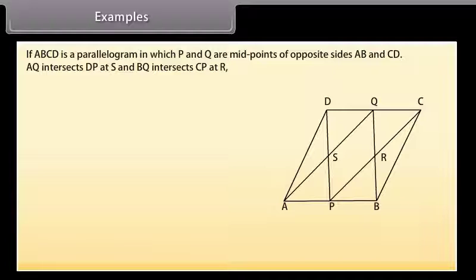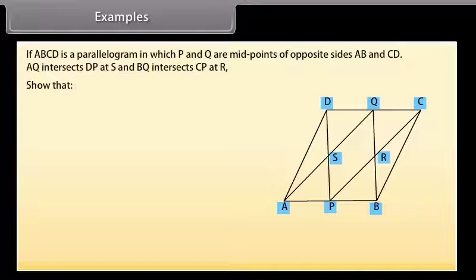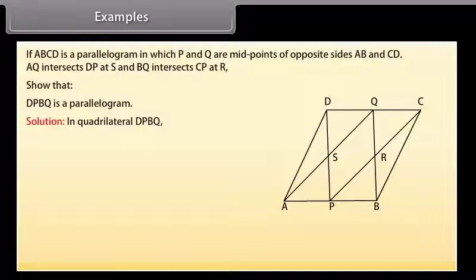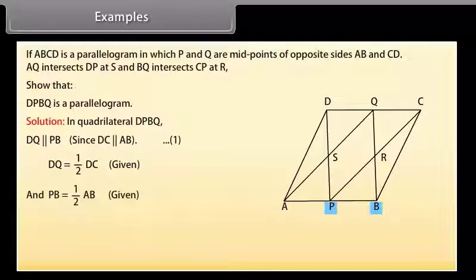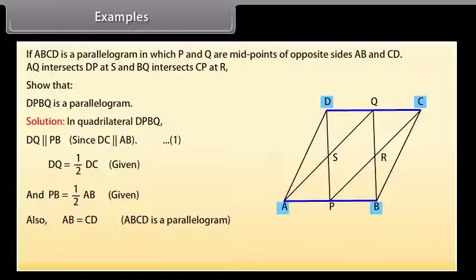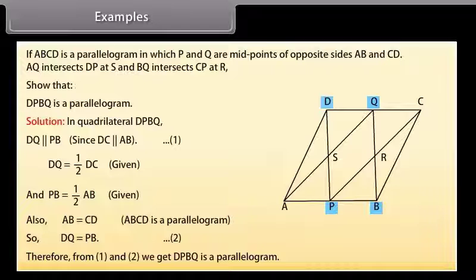Example: If ABCD is a parallelogram in which P and Q are midpoints of opposite sides AB and CD, AQ intersects DP at S, and BQ intersects CP at R — show that DPBQ is a parallelogram. Solution: In quadrilateral DPBQ, DQ is parallel to PB since DC is parallel to AB. DQ = ½DC (given) and PB = ½AB (given). Also AB = CD since ABCD is a parallelogram, so DQ = PB. Therefore from these two conditions, DPBQ is a parallelogram.